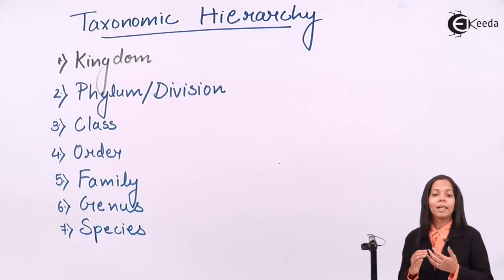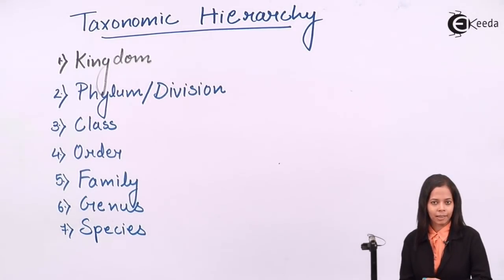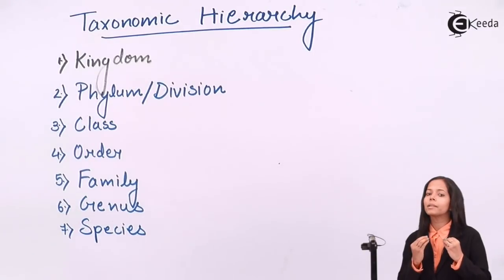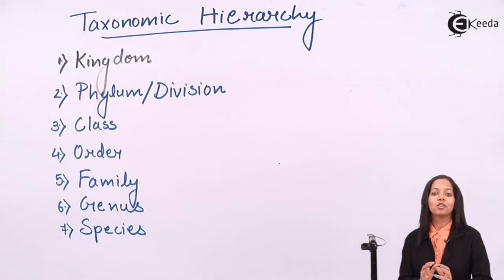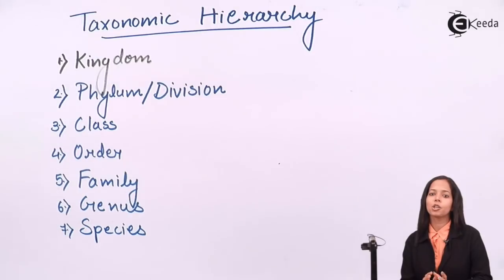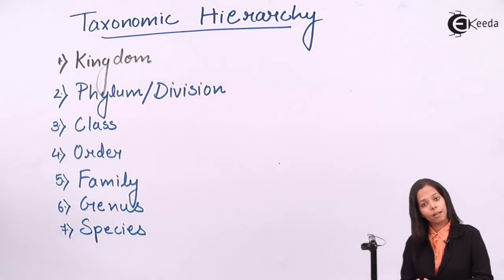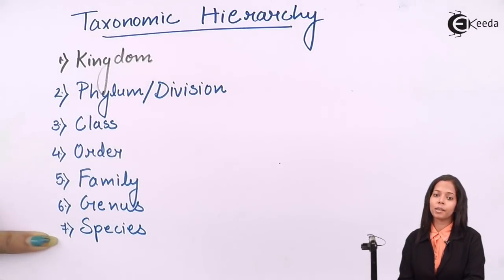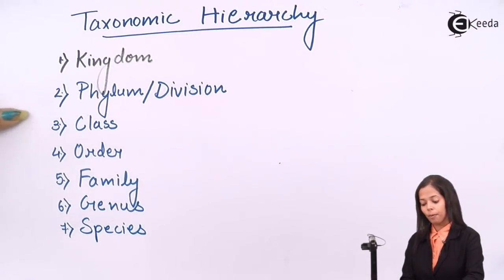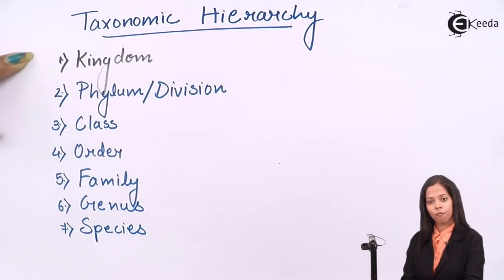Let's study each category in detail. What is the basic unit of college? The basic unit of any educational system is the student. Without students, no institute is possible. Similarly, in taxonomic hierarchy, species is the basic unit. Without species, the upper categories cannot be formed.